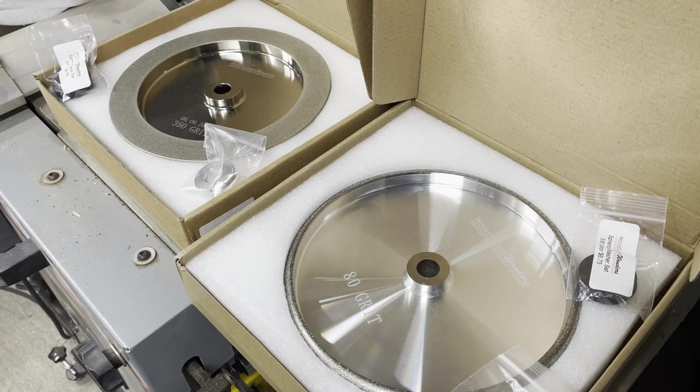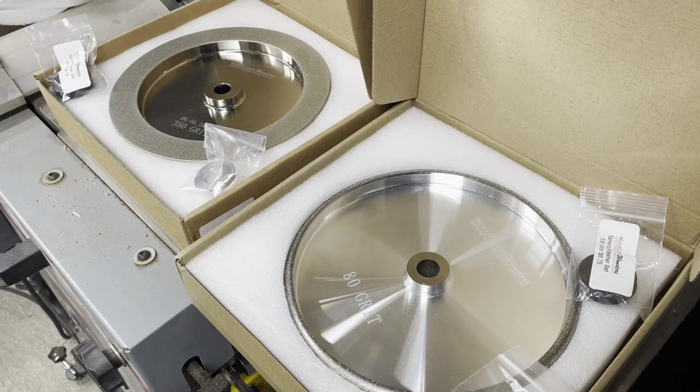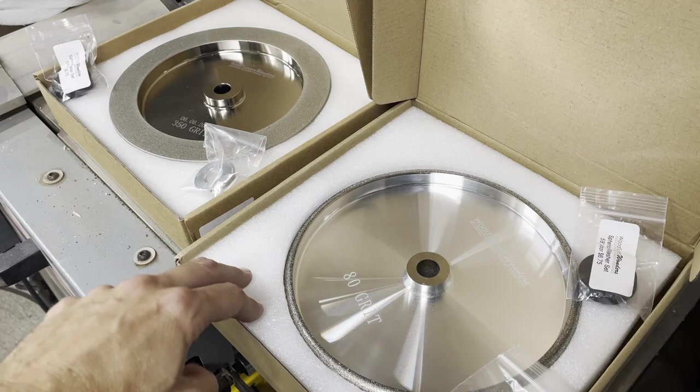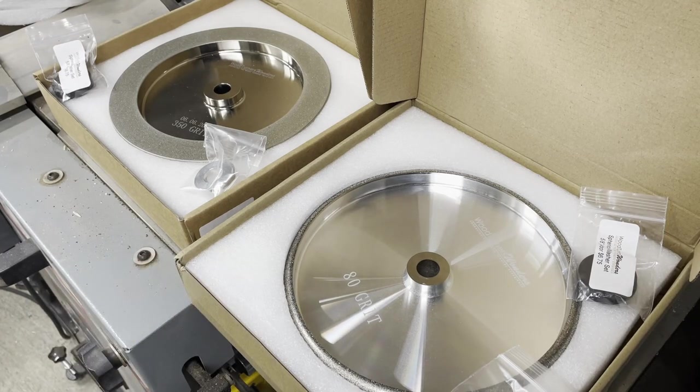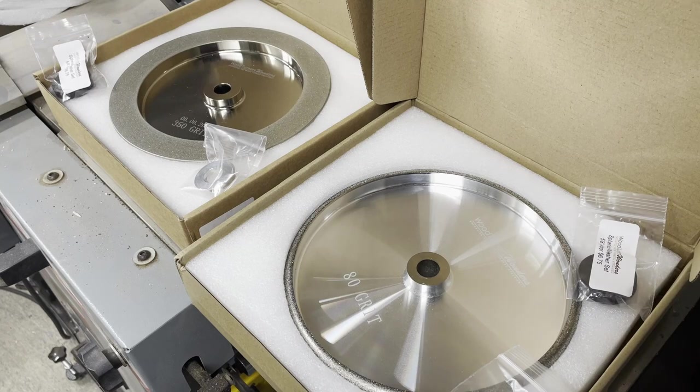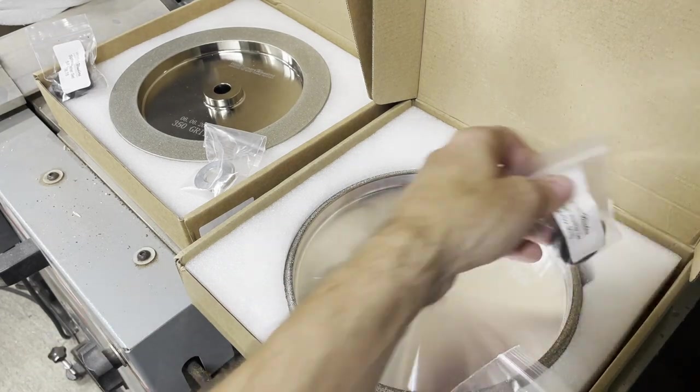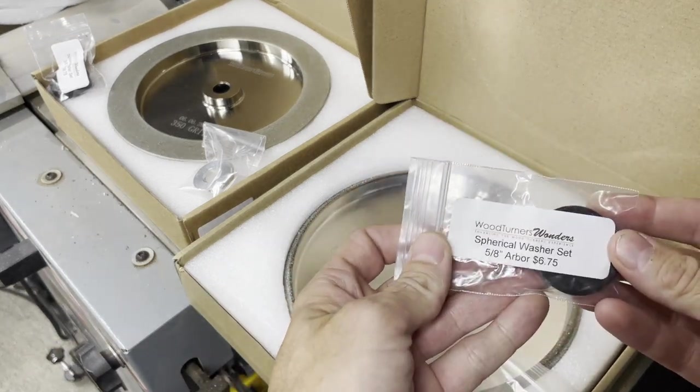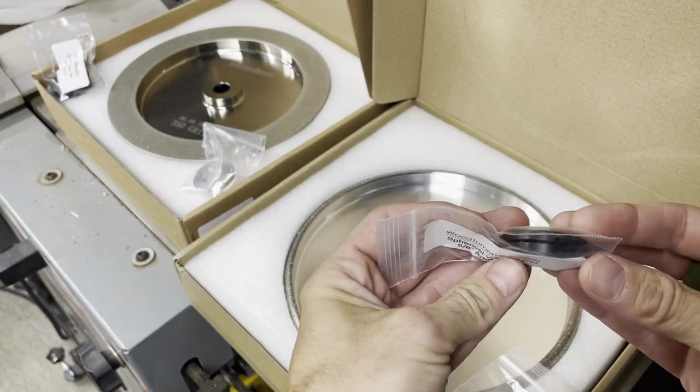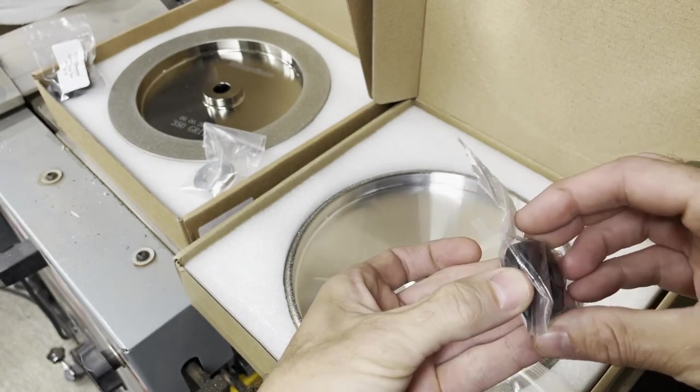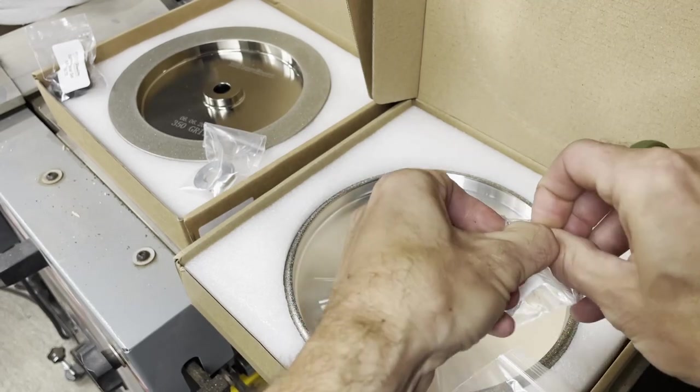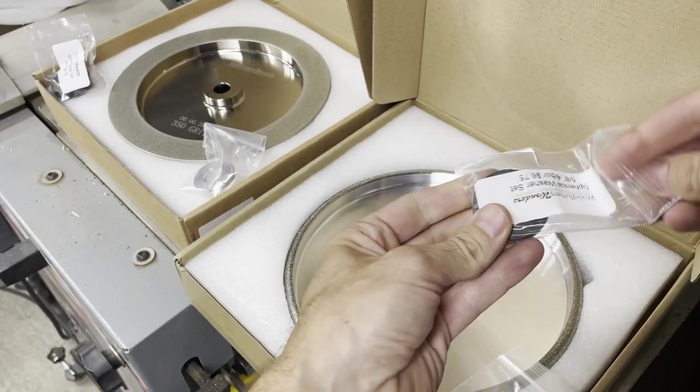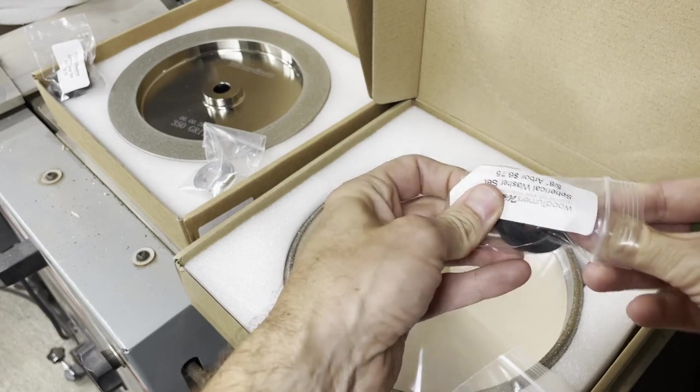So I got these wheels from woodturnerswonders.com, who sells the Rikon grinder which I bought, and sells these wheels as a set. I was wondering how they could get it to work so it's running true. It's because they sell these special magical spherical washers that apparently have a self-seating, self-aligning cup and saucer type situation going on. Let me open them and find out what it is.